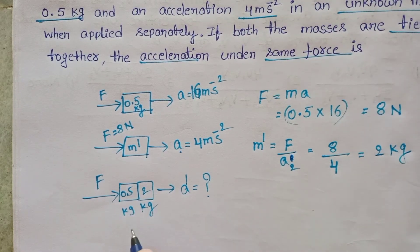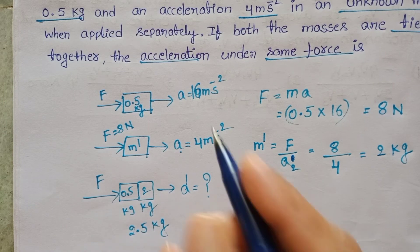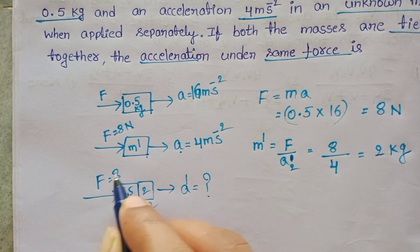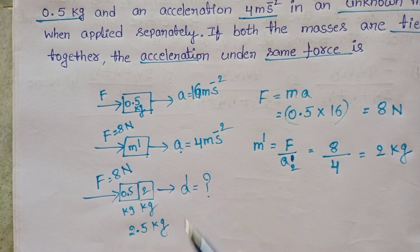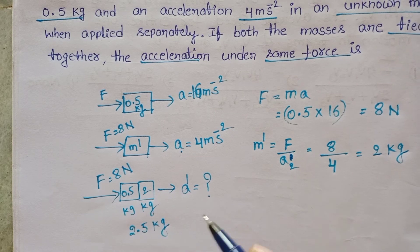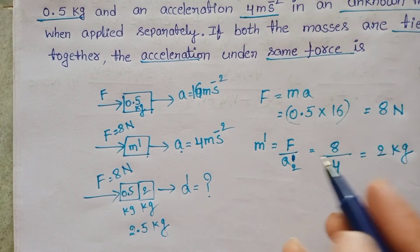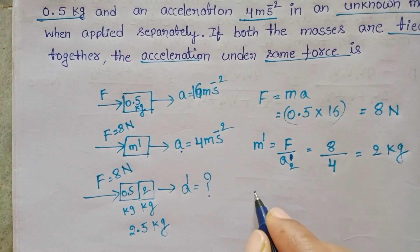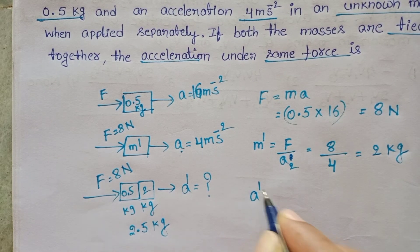After that, the 0.5 kg mass and 2 kg mass are tied together, so the total mass is 2.5 kg. The same force of 8 newton is applied on the combined 2.5 kg mass and we want the acceleration.